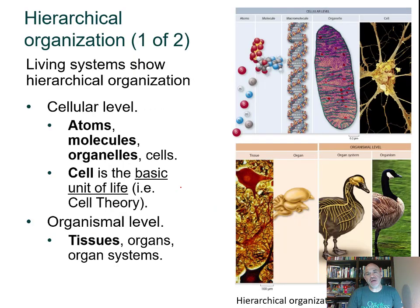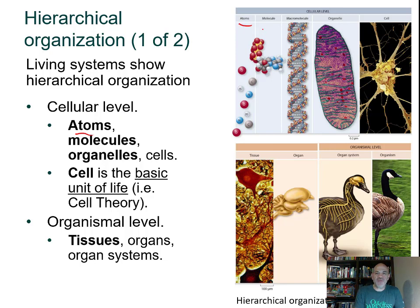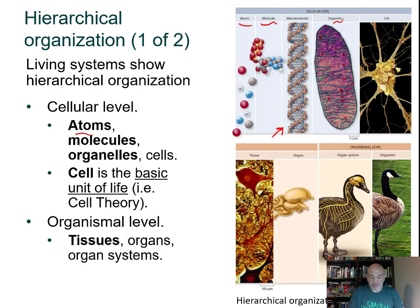There is a hierarchy of organization in biology. The lowest level relevant to biology is the atomic level — atoms are the smallest units of elements. Atoms bond to form molecules, and then macromolecules like the DNA double helix. Above that are organelles — for example, the mitochondrion, which breaks down food to produce energy in the form of ATP. Then comes the cell itself, such as a neuron.